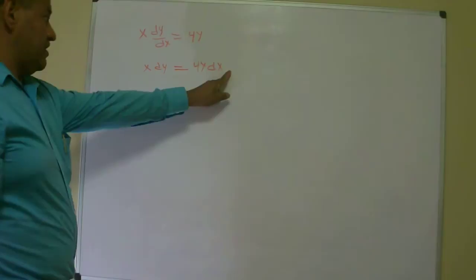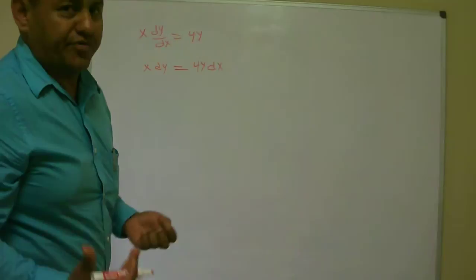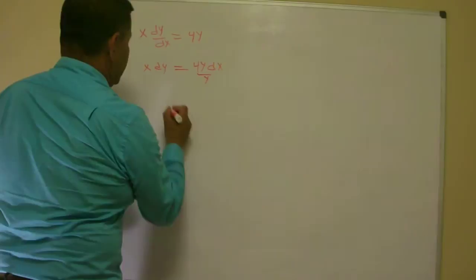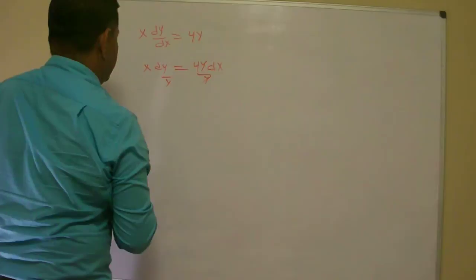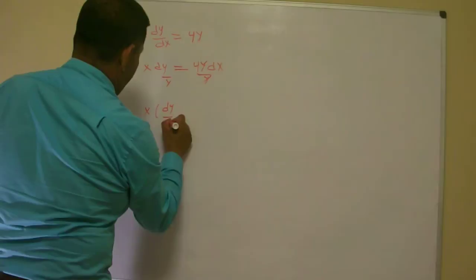So now I have this, the dx right here but I have dy right here, this problem is not separated yet. So what I am going to do right now, I want to divide by y on both sides, and this y cancels out, and I get x dy over y equals 4 dx.